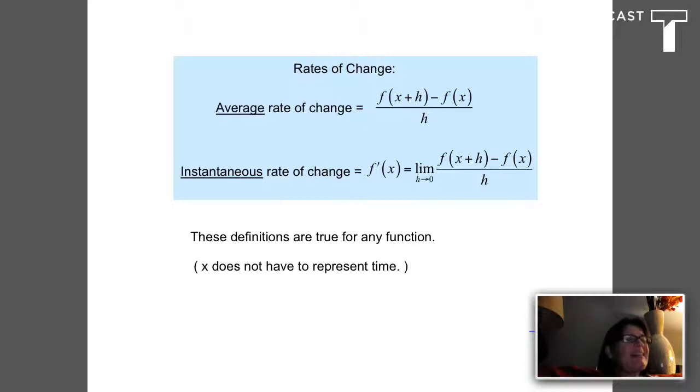We have also talked about instantaneous rate of change, which we sometimes call the derivative. The difference here is we're going to take the limit as that h value goes towards zero. So f prime of x, we know this formula now. The interesting thing is this doesn't have to be a position velocity acceleration function to work. We can take the instantaneous rate of change of any function.